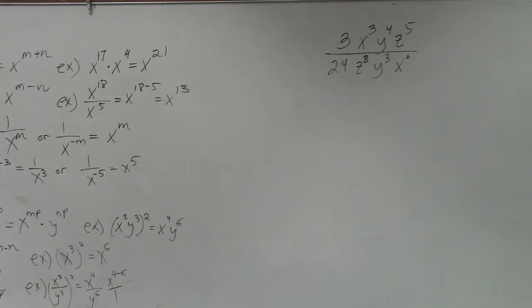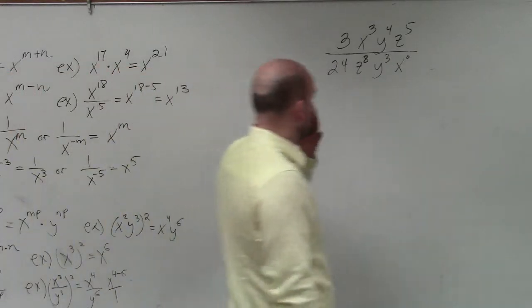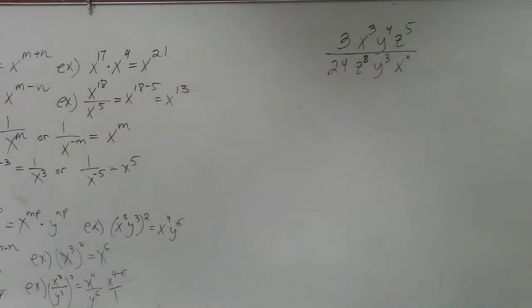So on the next example, basically what we have in this case is we are dividing two expressions here. In the first expression, I have 3x cubed y to the fourth, z to the fifth. And on the bottom, I have 24z to the eighth, y cubed, and x to the zero power.